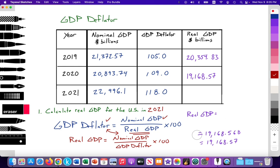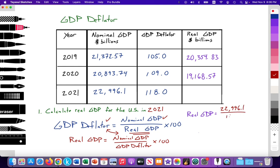Let's make these calculations. Real GDP equals nominal 22,996.1 billion, divided by the deflator of 118.0, times 100. That works out to 194.8822 times 100, which equals $19,488.22 billion. That is the real GDP for 2021, and we can fill that in.